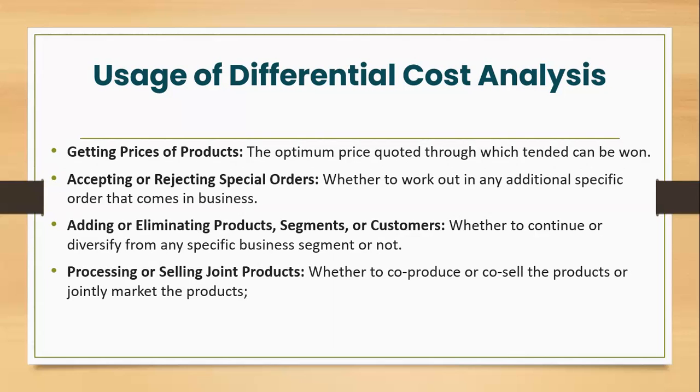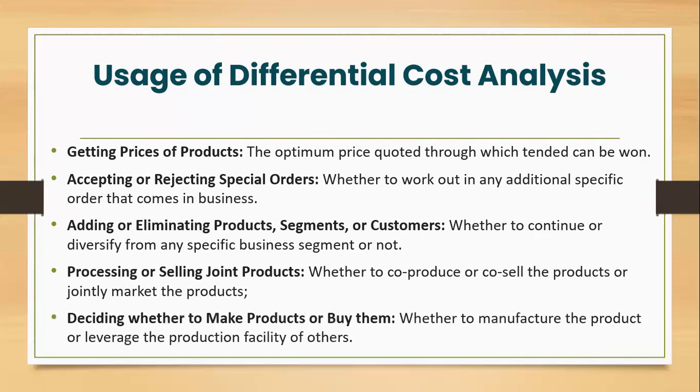Processing or selling joint products, whether to co-produce or co-sell the products or jointly market the products, could be decided using differential cost analysis. Last but not least, deciding whether to make products or buy them is also one application for differential cost analysis. A company can leverage the production facility of others. With this, we come to the end of this video. Thank you.